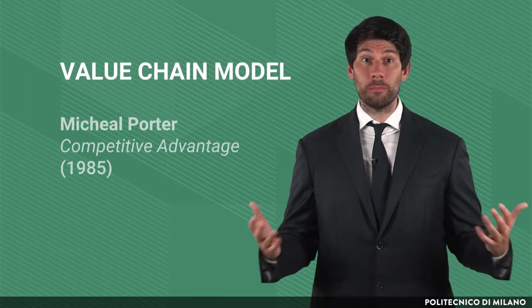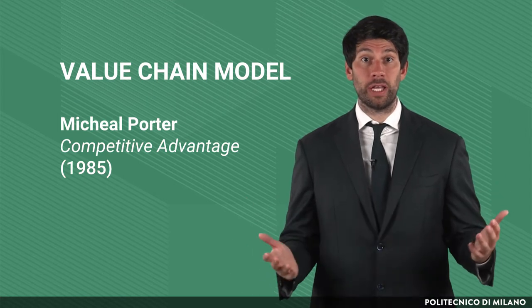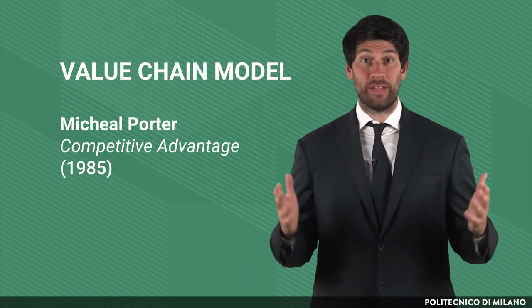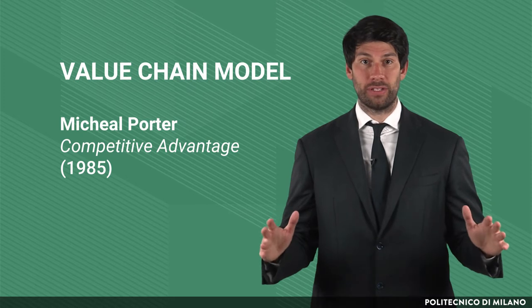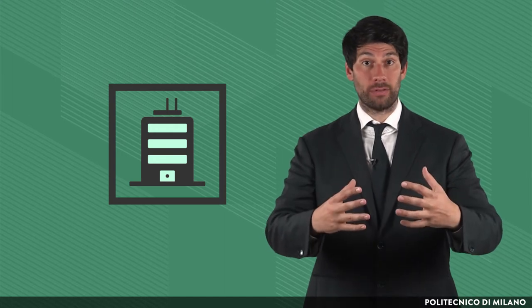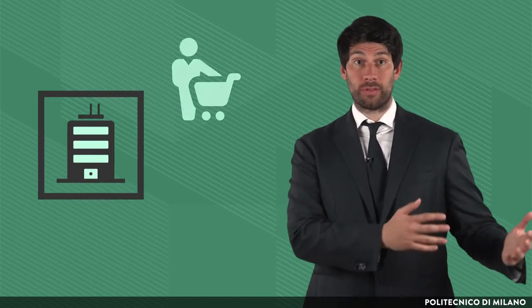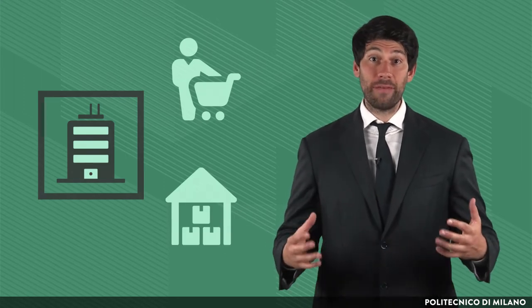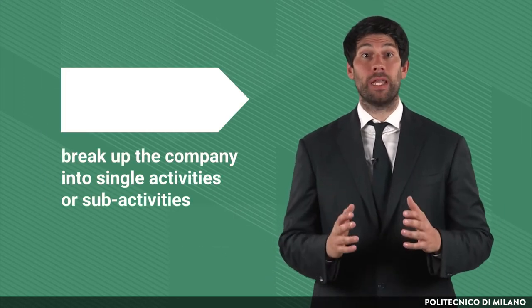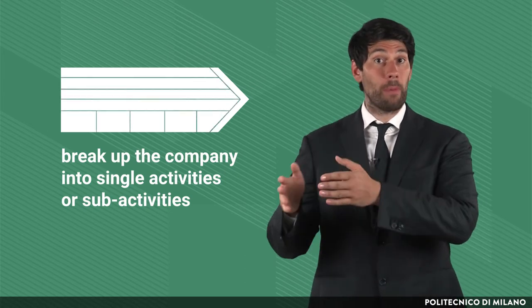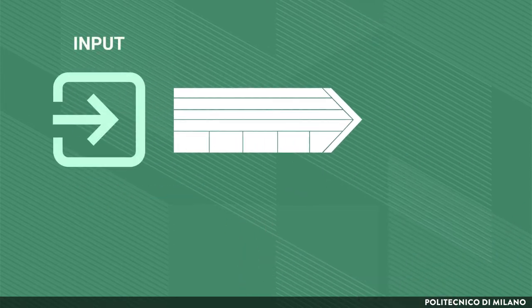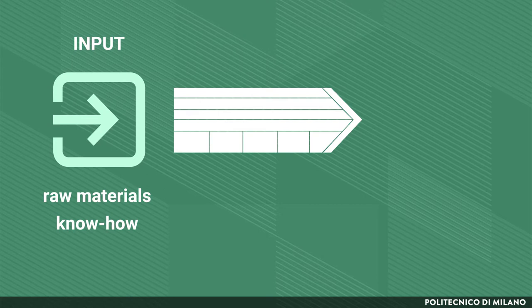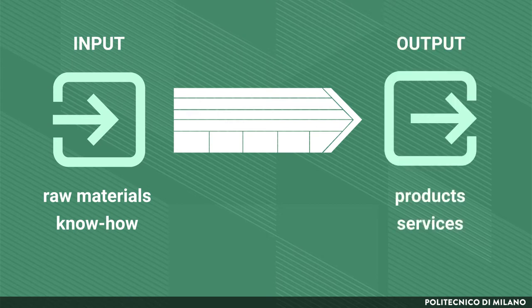The value chain model proposed by Michael Porter from Harvard Business School in his 1985 book Competitive Advantage is based on the idea that we cannot analyze competitive differentials if we consider the company in an aggregated way, as a black box, separated from the company's customers and suppliers. What we have to do is to break up the company into single activities or sub-activities, contributing to the process of transformation of inputs, like raw materials or know-how, into outputs — that is, products or services.